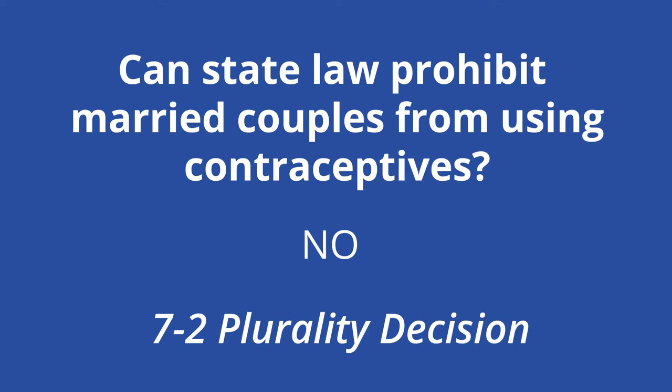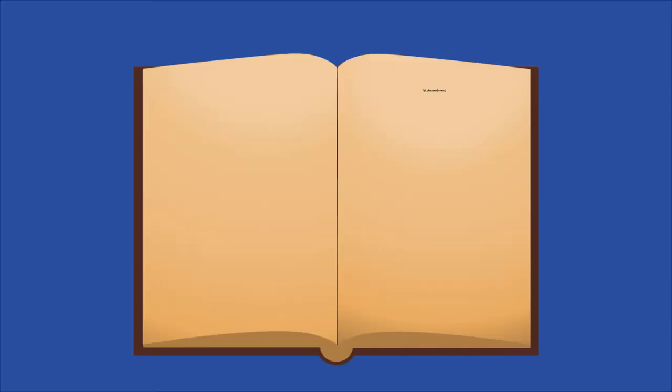Justice William O. Douglas decided to use privacy framing instead of economic liberty framing. The justice found the right to privacy in the constitution taken as a whole. He noted that the right to privacy can be found in the First Amendment, the Third Amendment,